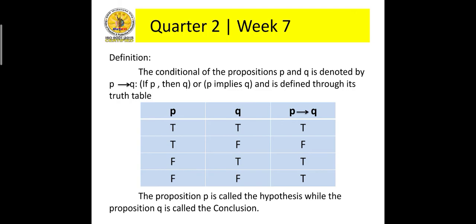The conditional of propositions P and Q is denoted by 'If P then Q' or 'P implies Q,' and is defined through its truth table, as shown below. The proposition P is called the hypothesis, while the proposition Q is called the conclusion.